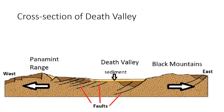In this cross-section of Death Valley, you can see the faults and down-dropped center, but you can also see that there is sediment on top of the down-dropped bedrock — over a mile of sediment — so that the center of the valley is not just 282 feet below sea level, but the bedrock dropped over 9,000 feet and has since filled up with sediment.